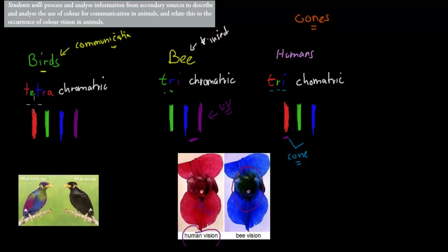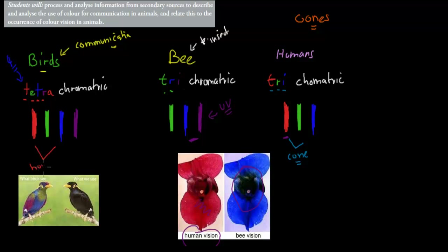Birds have tetrachromatic vision. Tetra means four, so they actually have four receptors: red, green, blue, and ultraviolet. Red, green, and blue are like the ones humans have — that's your human kind of spectrum — and they additionally have a UV receptor, so they can see more colors than we can.